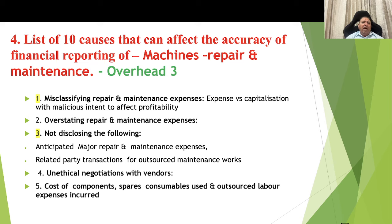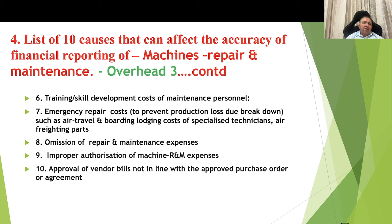Ten causes that can affect the accuracy of financial reporting of machine-related repair and maintenance expenses: number 1, misclassifying repair and maintenance; number 2, overstating repair and maintenance; number 3, not disclosing anticipated major R&M expenses related to party transactions; number 4, unethical negotiation with vendors; number 5, cost of components like spares, consumables, and outsourced labor not properly recorded; number 6, training and skill development costs for maintenance personnel not included; number 7, emergency repair costs to prevent production loss — such as air travel, boarding and lodging, specialized technicians, air freight — not included; number 8, omission of R&M expenses; numbers 9 and 10, improper authorization of machine R&M expenses and approval of vendor bills not in line with approved purchase orders or agreements.